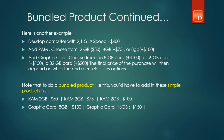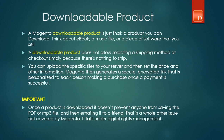Moving on to downloadable products — it's exactly as it sounds: something that you can download. Think of an e-book, an MP3, a file, or a piece of software that you want to sell. Once somebody buys it and payment is successful, they can go ahead and download it. You need to upload these files to your server or a different server. Once payment success has been achieved, Magento sends the customer an encrypted link saying go here and download the product.